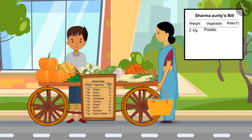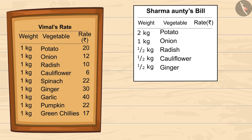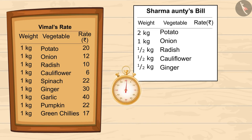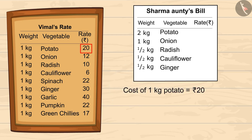She bought 2 kgs of potatoes, 1 kg of onions, half a kg of radish, half a kg of cauliflower, and half a kg of ginger. Let's together find out the total price of Sharma auntie's purchase from Vimal. You can pause the video and calculate it with the help of Vimal's list.